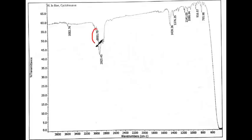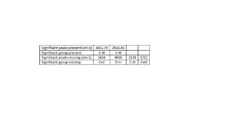This is the IR spectrum of the product. The two peaks around 3000 wavenumbers indicate C-H groups connected to the alkene, which shows that an alkene is present. This is a data table showing significant peaks and groups present, and significant peaks and groups missing.